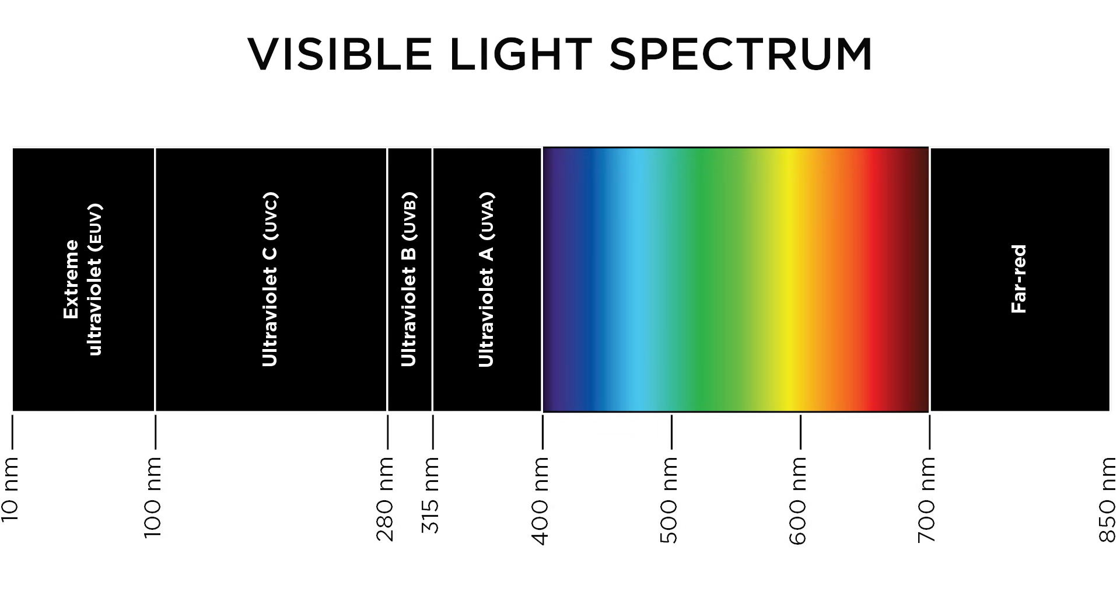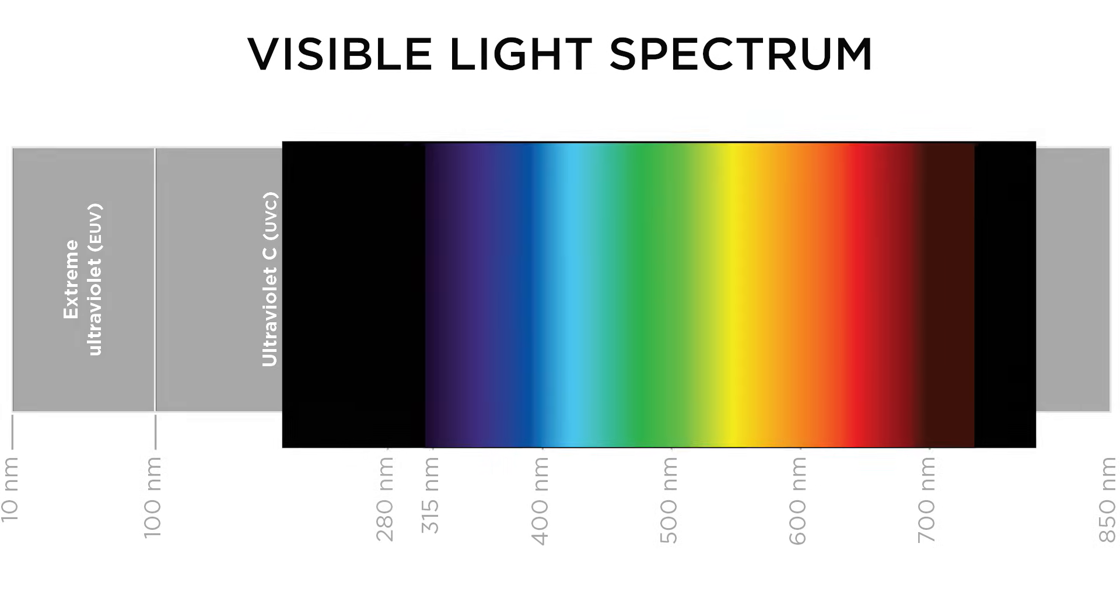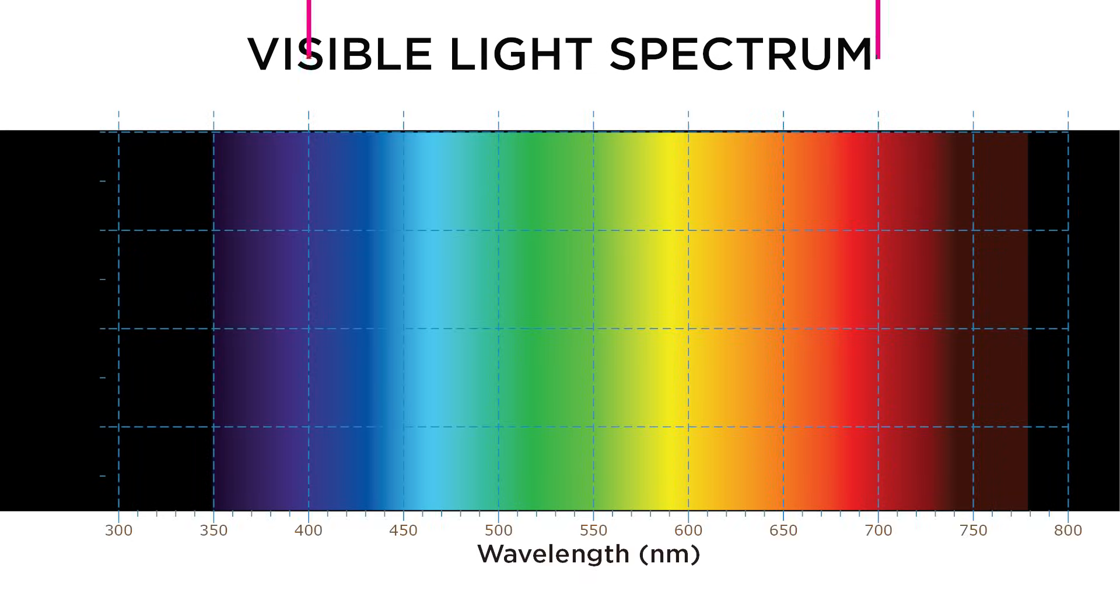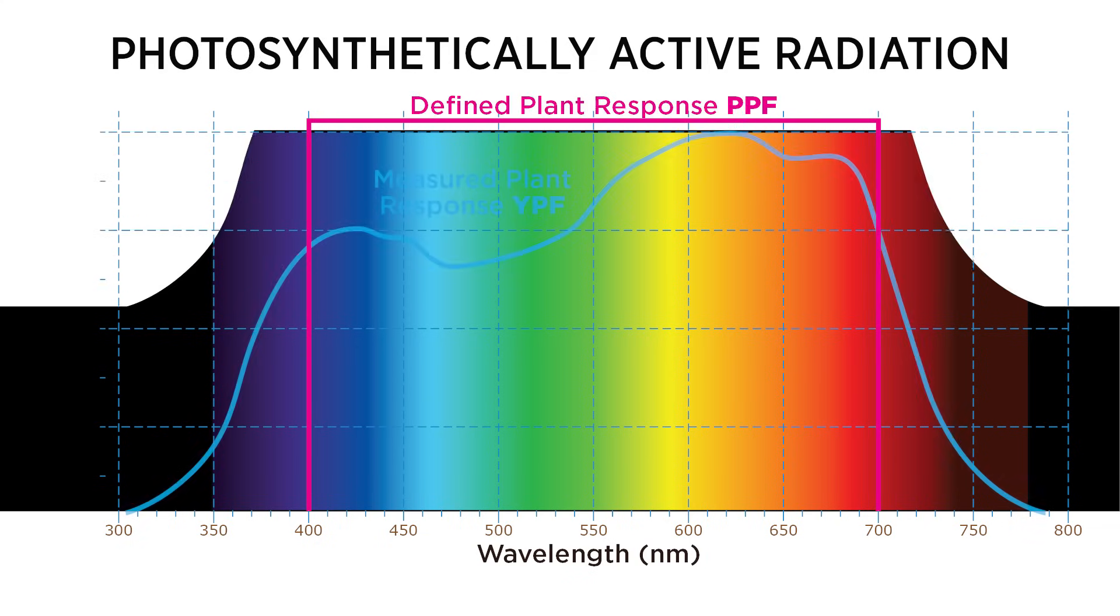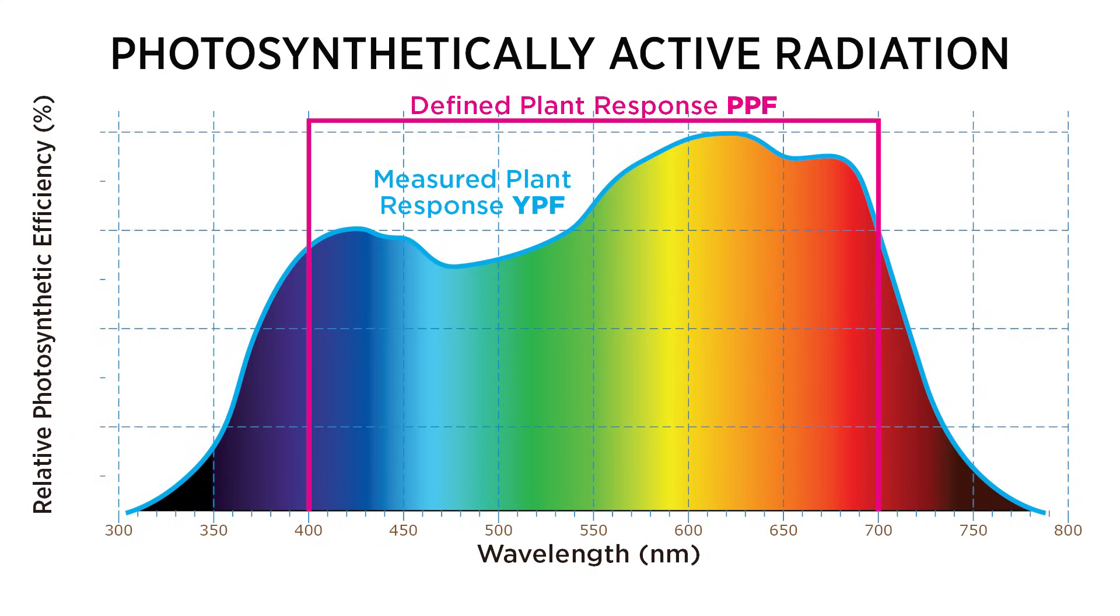Of course, the most crucial range for plant growth is within 400 to 700 nanometers in color range. Photons within this range are most effective at driving photosynthesis. This is referred to as PAR light, photosynthetically active radiation. Note that this range includes even green light.